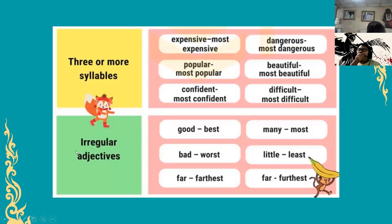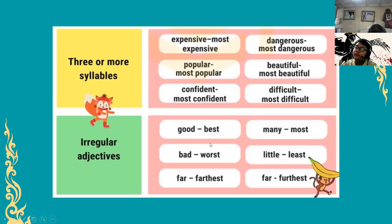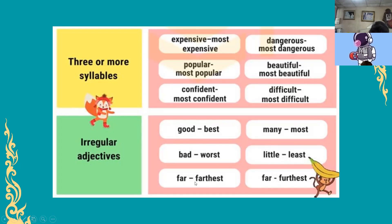And then we have the irregular adjectives — these change spelling. Good becomes 'best'. Bad becomes 'worst'. Far becomes 'farthest'. Many becomes 'most'. Little becomes 'least' or 'smallest'. For far, you can use F-U-R or F-A-R — farthest either way, it's the same.